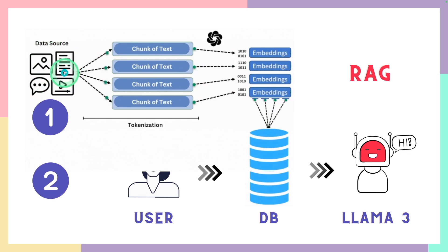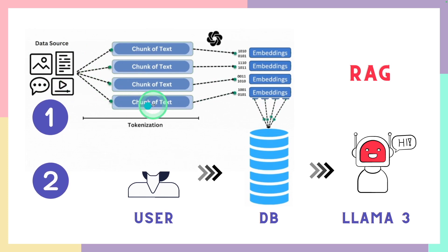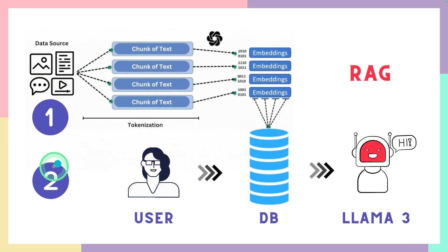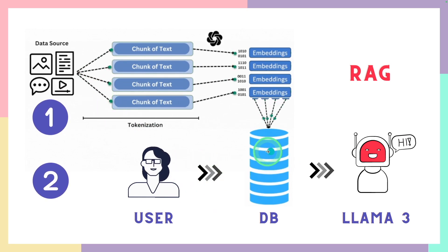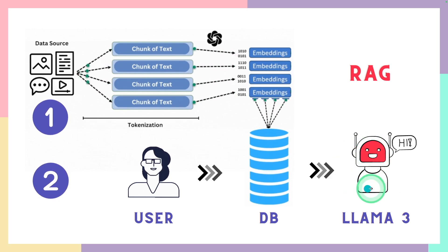The first step is to provide the data — in our case it will be a PDF file. Once we provide the data, it will automatically chunk the text, convert those chunks to embeddings, and save them in the database. The second step is that the user asks a question based on the uploaded PDF, which is searched in the database and sent to Llama 3 to get a more accurate answer. The whole RAG is put together using Phi data.